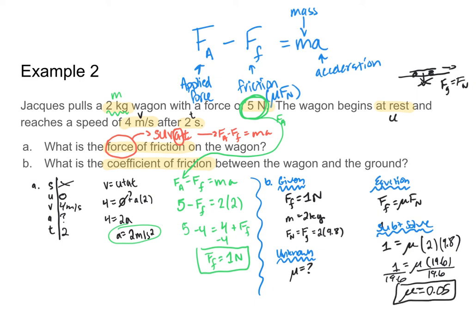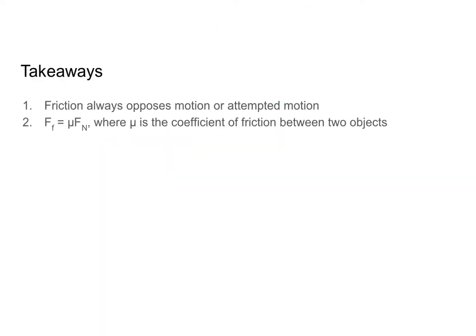So that's the answer for example two. Now for the takeaways: first, friction always opposes motion or attempted motion — if I'm pushing on something and it's not moving, friction still opposes that attempted start of motion. Second, the force of friction is mu times the normal force, where mu is the coefficient of friction between two objects.